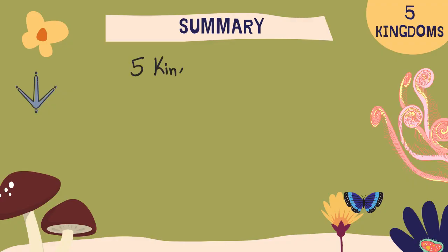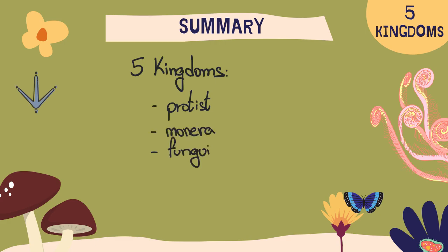In summary, there are five kingdoms of living things: the protist kingdom, the monera kingdom, the fungi in the fungus kingdom, the plants in the plant kingdom, and the animals.